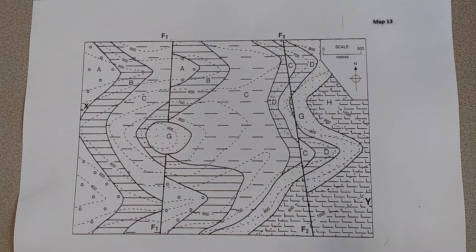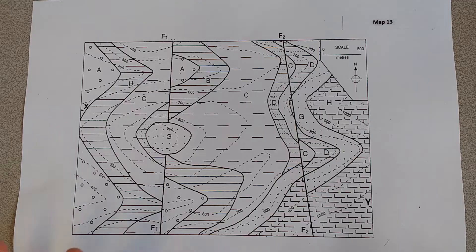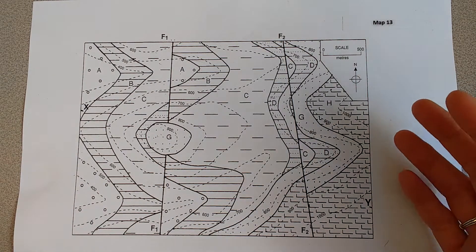Now an unconformity is when we've got an erosional surface, usually of some rocks underneath that have been then deposited by a different sequence of rock on top.